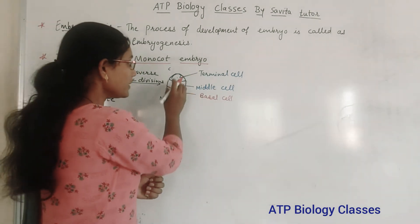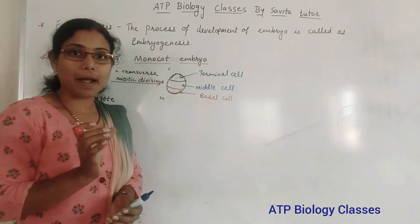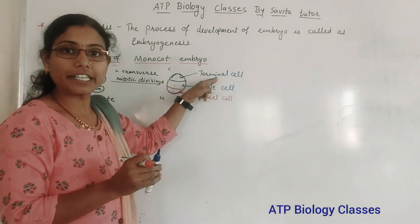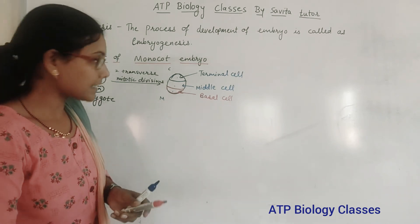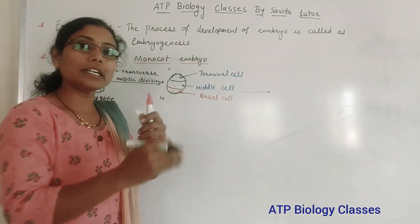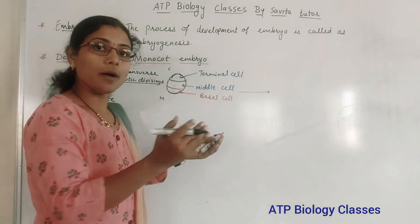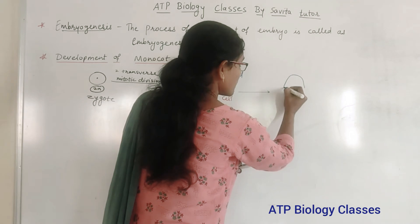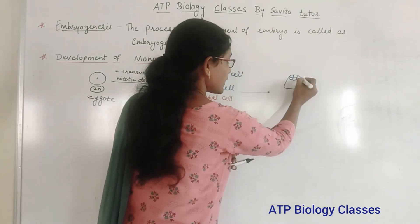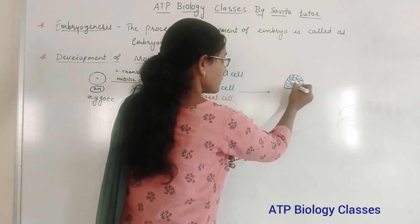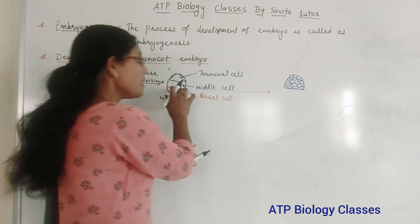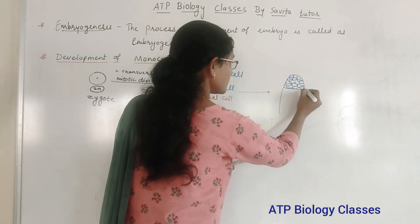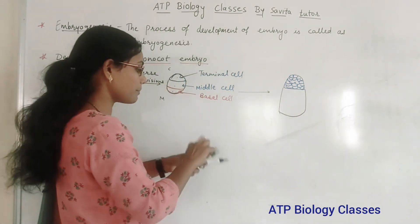For the formation of the complete embryo, the middle cell takes part. The basal cell will not take part at all — it will remain as it is. The terminal cell will give rise to the protoderm. It will divide continuously and form a mass of cells. The middle cell will also divide many times and form a mass of cells.